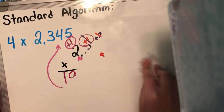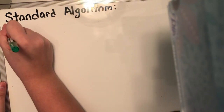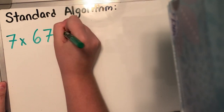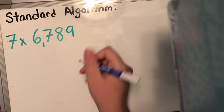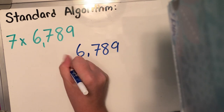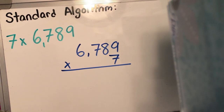It's also really important that you guys know your multiplication facts, because you don't wanna write down the wrong number and get the problem wrong. So we're gonna do one more before moving on to double digit. So I have seven times 6,789. I'm gonna go ahead and rewrite it, just like so. And let's start.